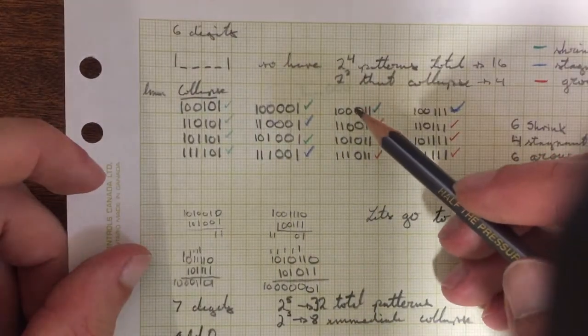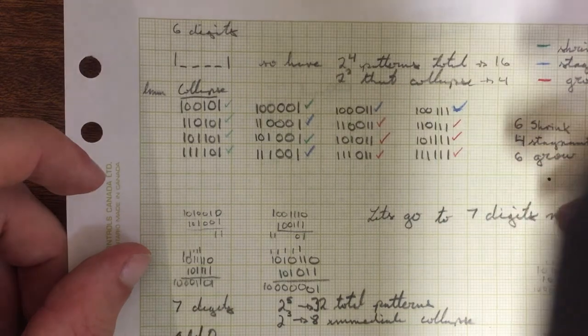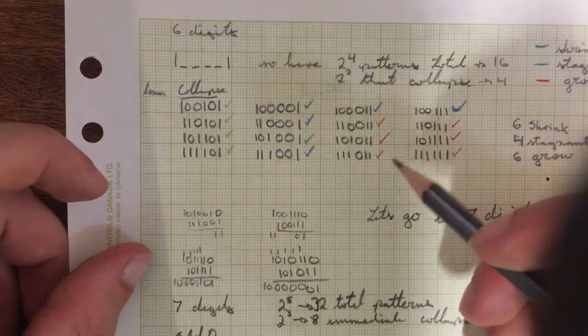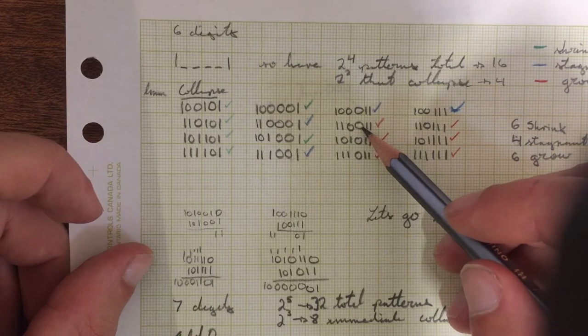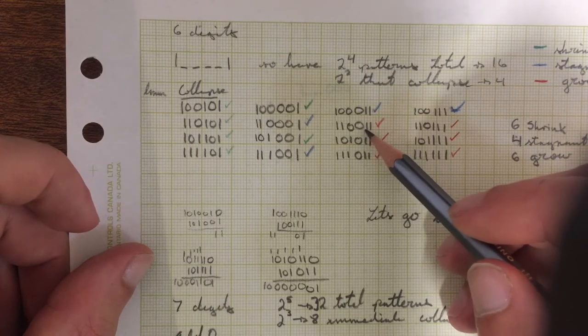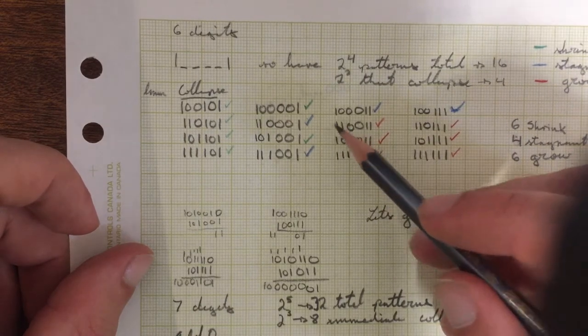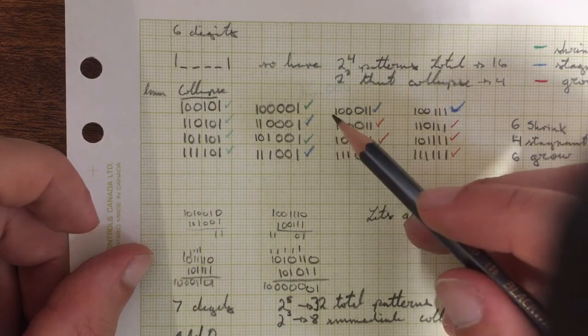We can see with six digits here that we have two examples. We have this 0011 pattern here which is stagnant. And then we have this other one here, right underneath that, which grows because it's got the double one up front. So that induces a growth of two digits.